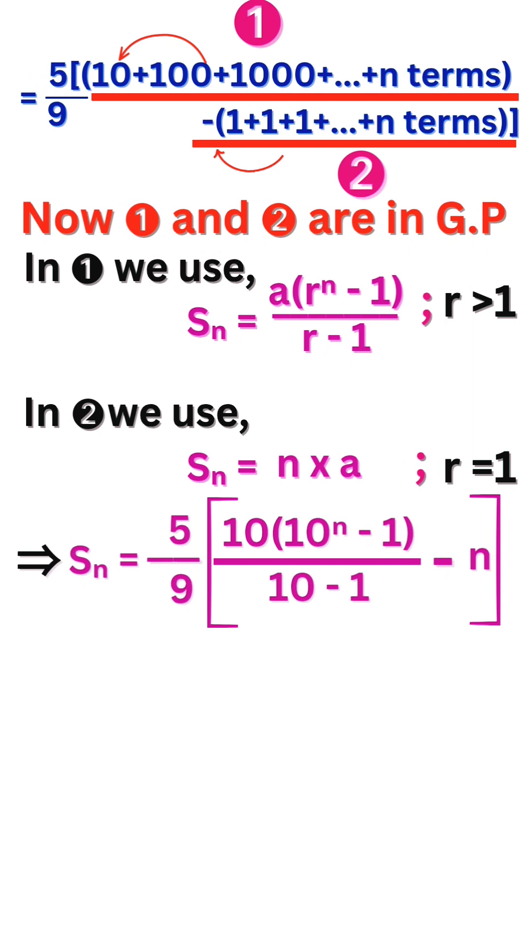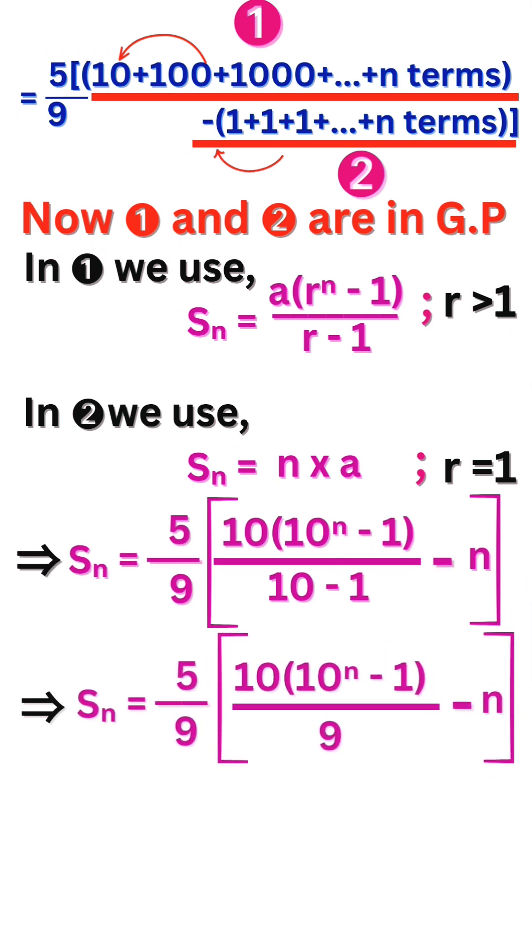We get 5 by 9 into 10 into 10 power n minus 1 divided by 10 minus 1 minus n. In first equation, the denominator 10 minus 1 is 9, so we get 5 by 9 into 10 into 10 power n minus 1 divided by 9 minus n.